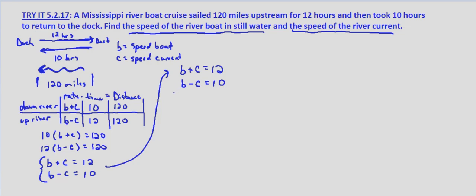And if you'll notice, C and minus C, we can just add these together to get rid of the C variable. So B plus B is 2B, C minus C, or C plus negative C, those cancel, equals 12 plus 10 equals 22. Divide both sides by 2, and we get B equals 11 miles per hour.